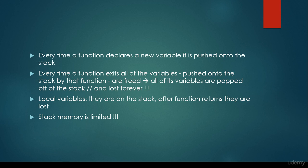All variables are popped off the stack and lost forever. This is what we have been discussing — the operations that stacks support: pop, peek, and push. That's how a stack gets rid of variables: it pops them off the stack. So local variables are on the stack, and after a function returns, they are lost forever.